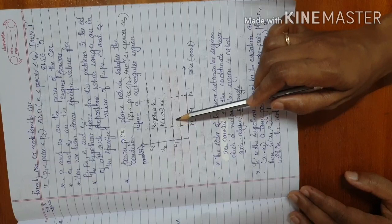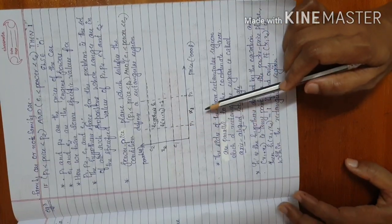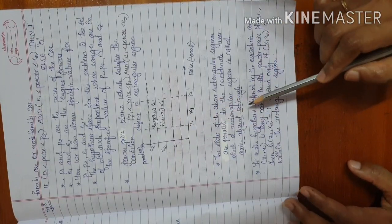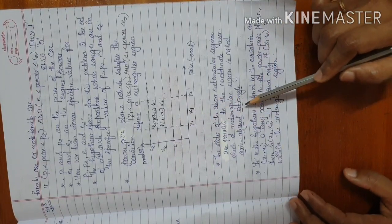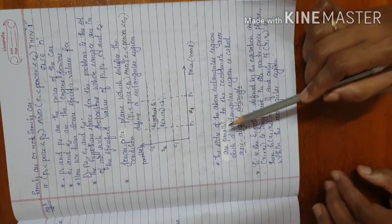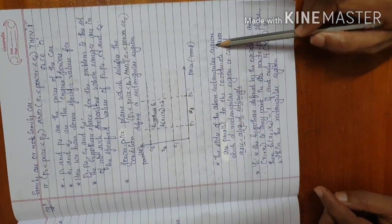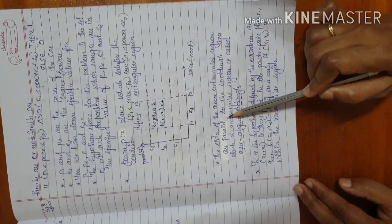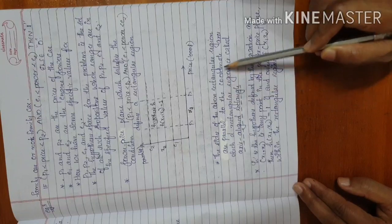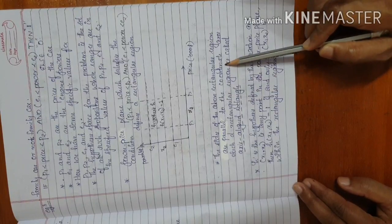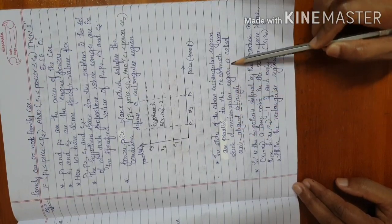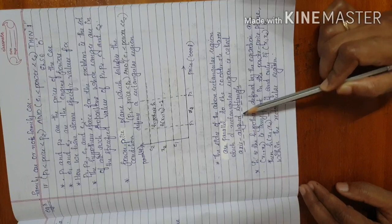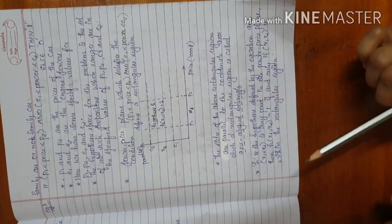The region is parallel to the coordinate axis — that is the axis-aligned rectangle. The sides of the above rectangular region are parallel to the coordinate axis. Such a rectangular region is called an axis-aligned rectangle.